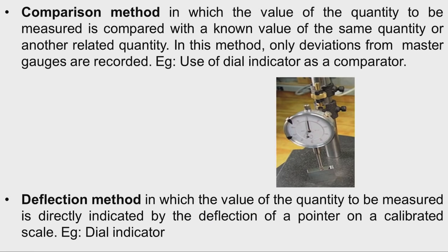The third method is the comparison method, in which the value of the quantity to be measured is compared with a known value of the same or a related quantity. In this method, only deviations from master gauges are recorded. For example, use of a dial indicator as a comparator.